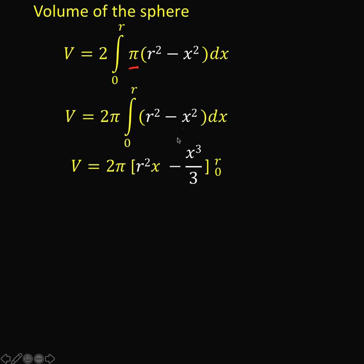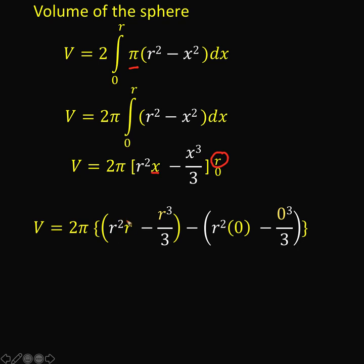In both cases, we did not write the plus c anymore. Because when we evaluate this expression, the c will just be cancelled out. So, let's simplify now this last line. Evaluating at x equals r, we copy the 2 pi. We copy the r squared. We replace x by r to get r squared times r. Copy the minus. We replace x by r again to get r to the third over 3.